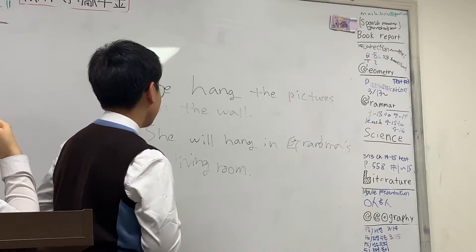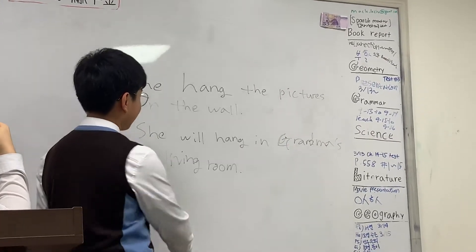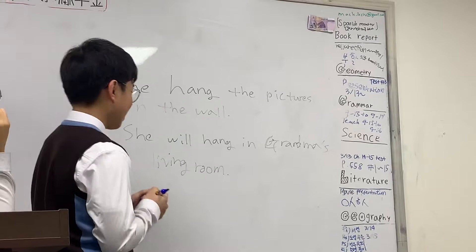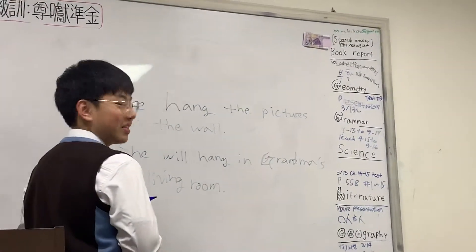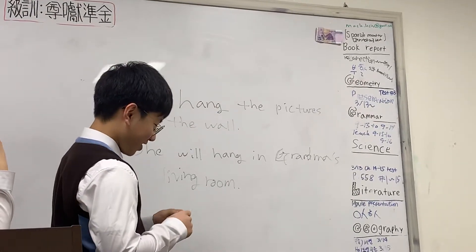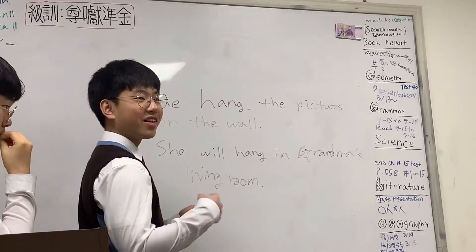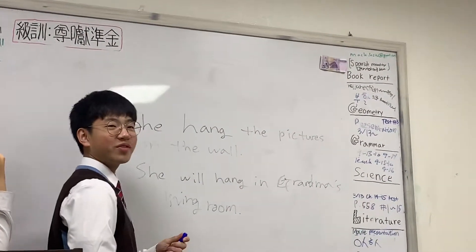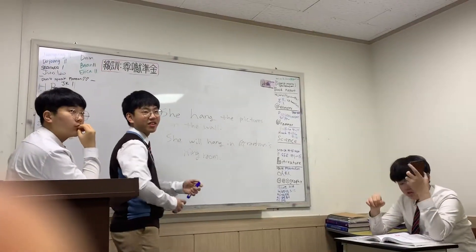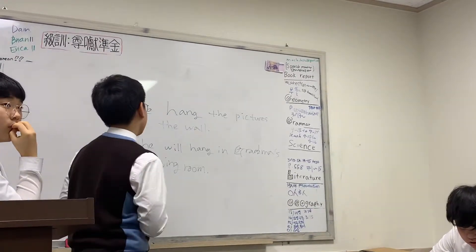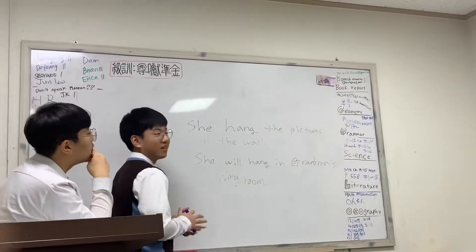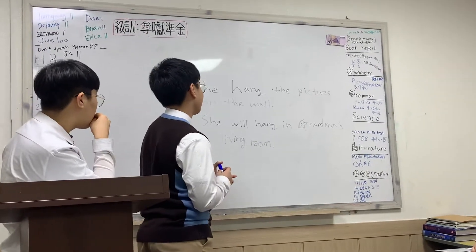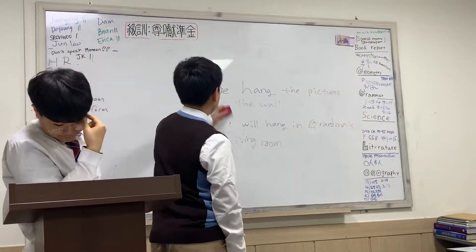So, Tui, in the first one we have an object with the verb hang. What is the object, first of all? The pictures. So that means she's going to put the pictures up on the wall. Without an object, the verb hang has a very different meaning. What's going to hang? Hang in means to go to. So is it the pictures that will hang in grandma's living room? No. She will go in. Who's going to hang? She. So the person is going to hang. Do you see the difference? Number two means that if we use 'she will hang,' it means this. So that's why Sunwoo was right the first time. Okay, got it? Good.